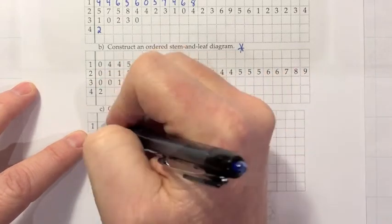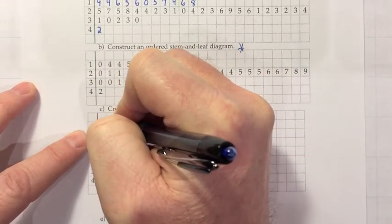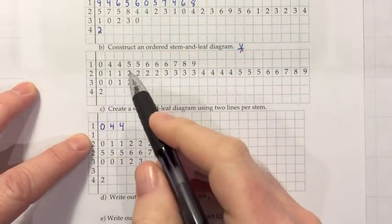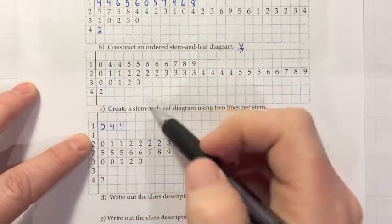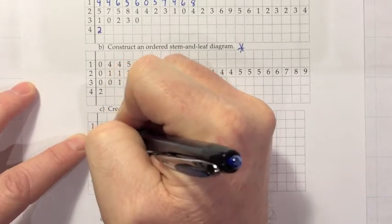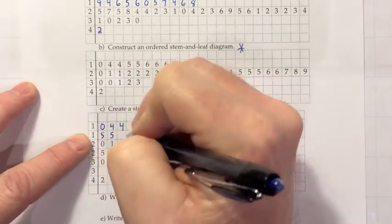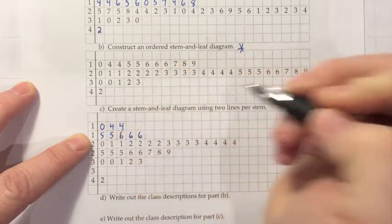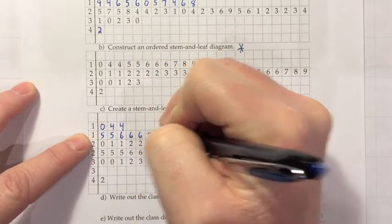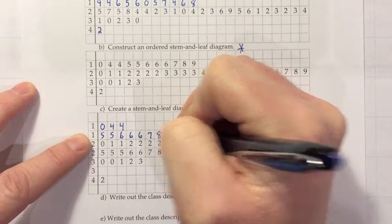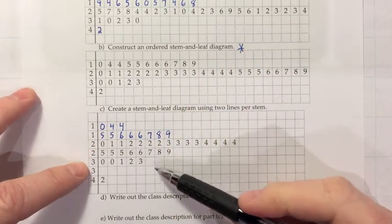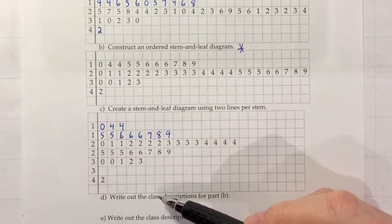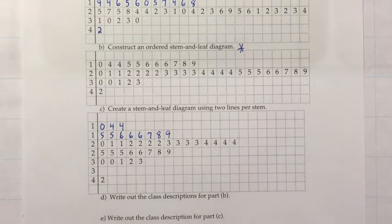So if we go to do that here, the zero, four, four would go in the lower tens. So we'd put the 10, the 14, and the 14 on this line, and then anything from 15 up would go on the next line. So we have a couple fives, three sixes, and then seven, eight, nine. And then lower twenties, upper twenties, lower thirties, upper thirties, lower forties, and it would be upper forties. So there's the two lines per stem.